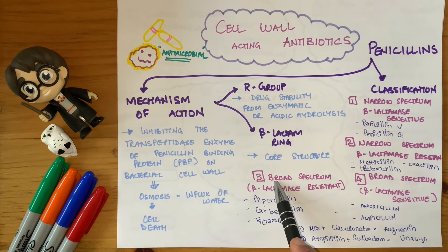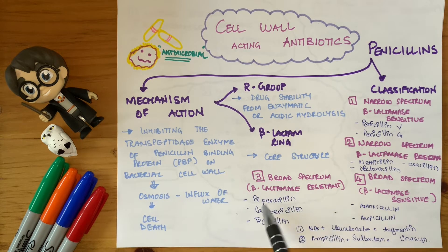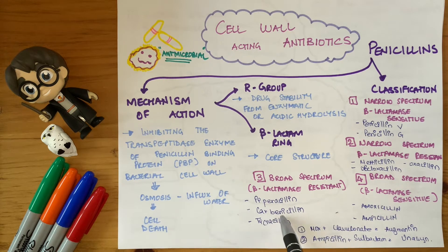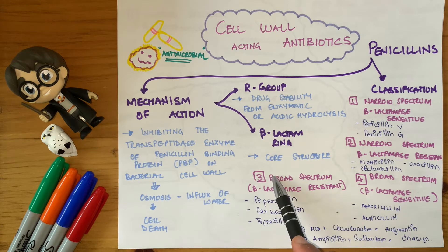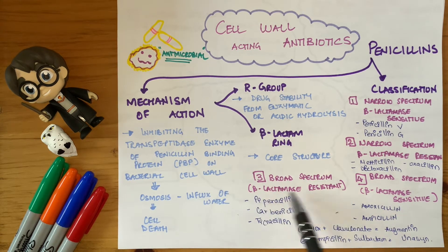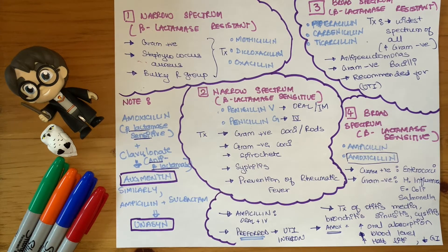The last group is broad spectrum beta-lactamase resistant, which includes piperacillin, carbenicillin, and ticarcillin. These can cover a wide range of bacteria and can fight the beta-lactamase enzyme — very strong penicillins. These are the penicillins we usually consider in the dental field.